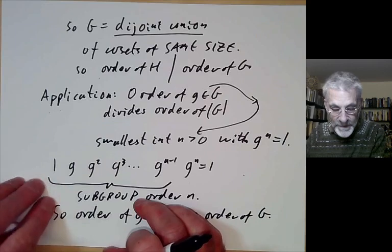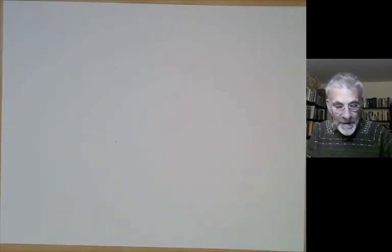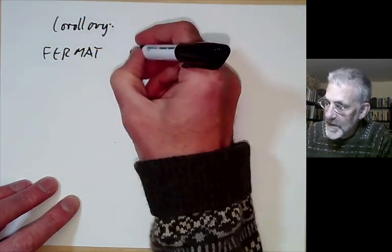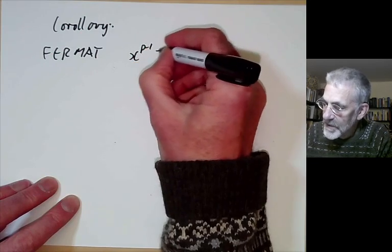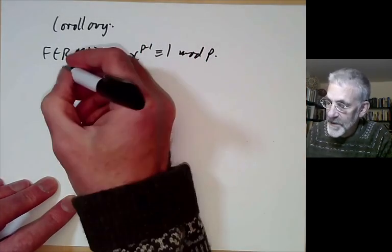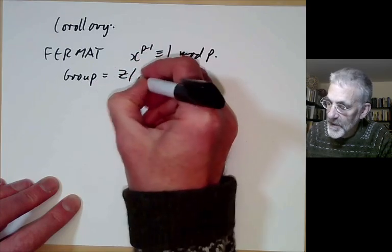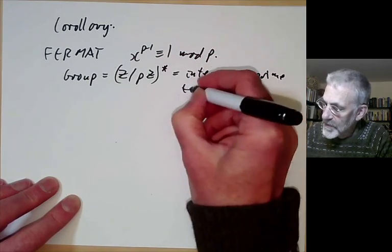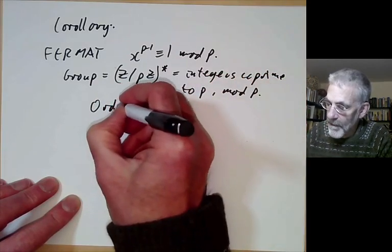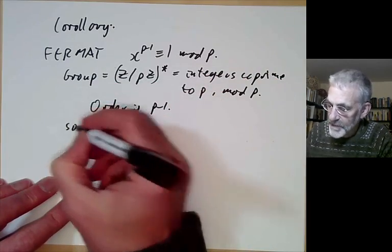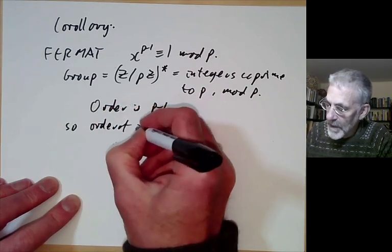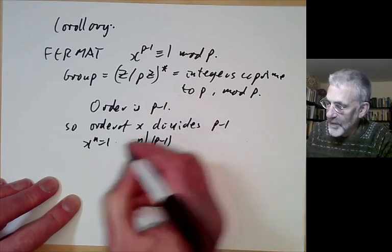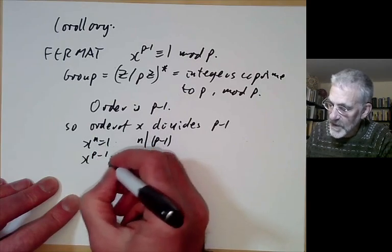So that's Lagrange's theorem. We have two very important corollaries. First, Fermat's theorem, which says x to the p minus 1 is congruent to 1 mod p. For this we take the group to be Z modulo pZ star — the integers co-prime to p taken mod p — and the order is p minus 1. The order of an element divides p minus 1, meaning x to the n equals 1 for some n dividing p minus 1, and by raising to a sufficiently high power, x to the p minus 1 is also congruent to 1.